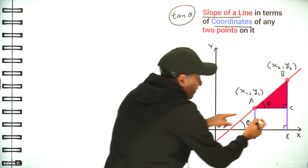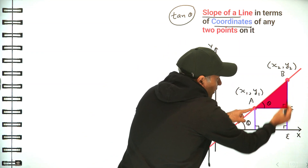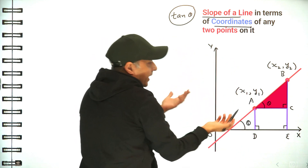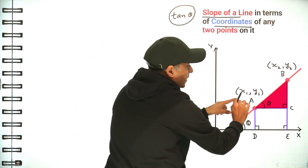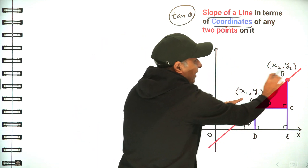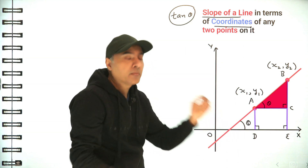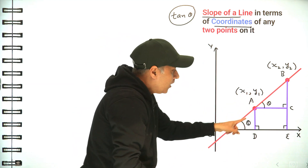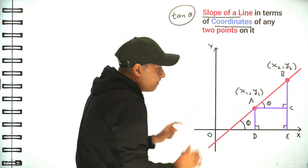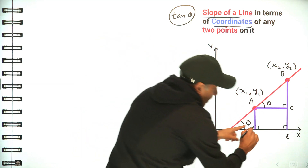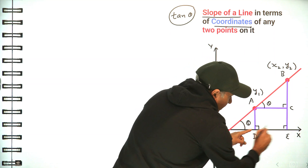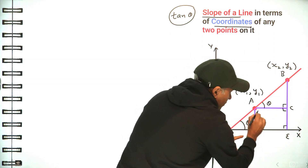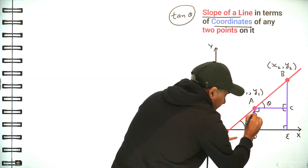The angle at A in triangle ACB will also be equal to theta — I'll explain why. Using this triangle we have to find the value of tan(theta), and we'll get it in terms of x1, y1, x2, and y2.